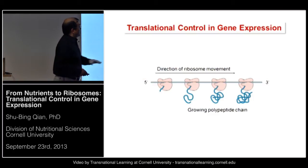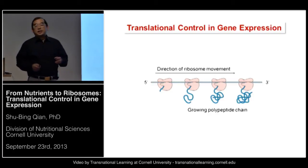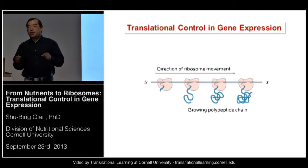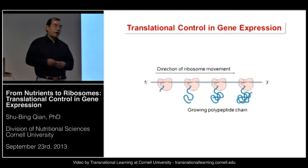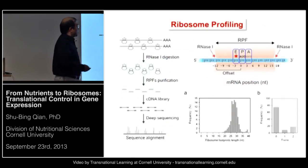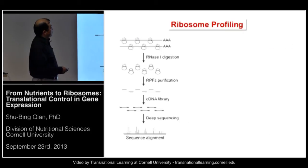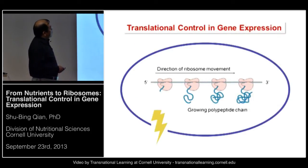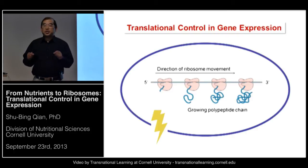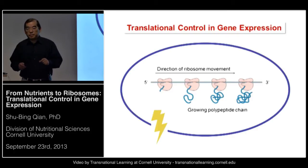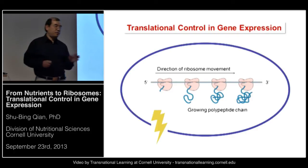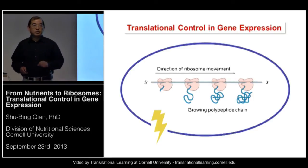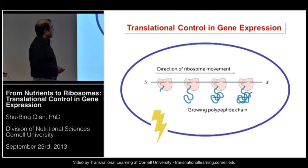What I've told you so far is that the translation process plays a very important role in protein homeostasis. We then started to focus on the translation machinery itself — the ribosome. Many fascinating questions remain unanswered regarding the role of ribosome in translational control. For example, what happens to ribosome dynamics when cells are exposed to stress?